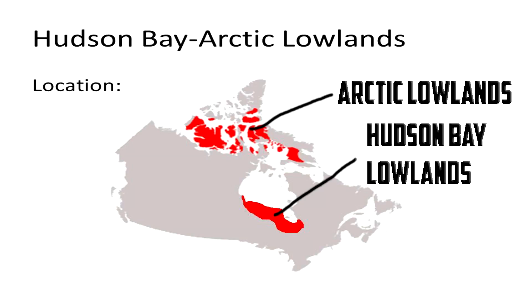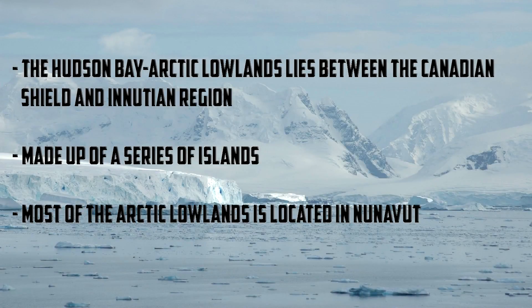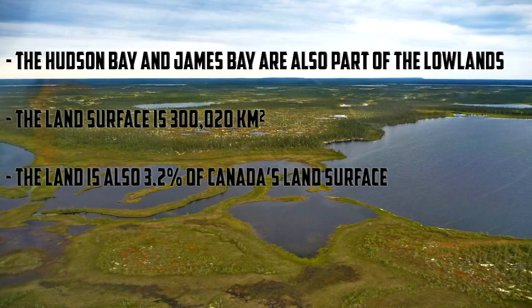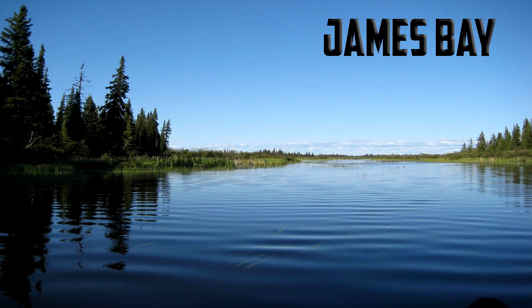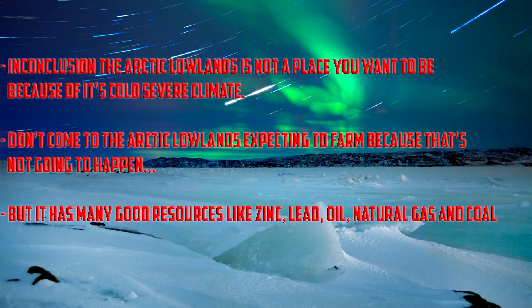The Hudson Bay Arctic Lowlands is a division lying between the Canadian Shield and the Inuitian region, south of the surfaces and low land plains. The Arctic Lowlands are made up of a series of islands in Canada's far north, part of the Arctic Archipelago. Hudson's Bay and James Bay are also part of the Arctic Lowlands. The land area is 320,000 kilometers squared, or 3.2% of Canada's land surface. 40% of the sedimentary basin is in the middle of the Canadian Shield, while the remaining 60% lies beneath Hudson's Bay and James Bay.